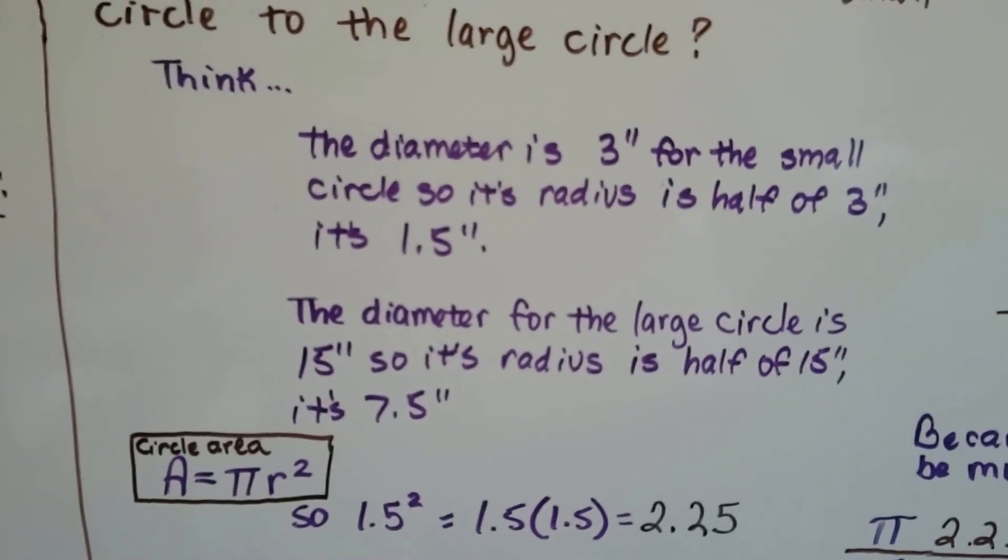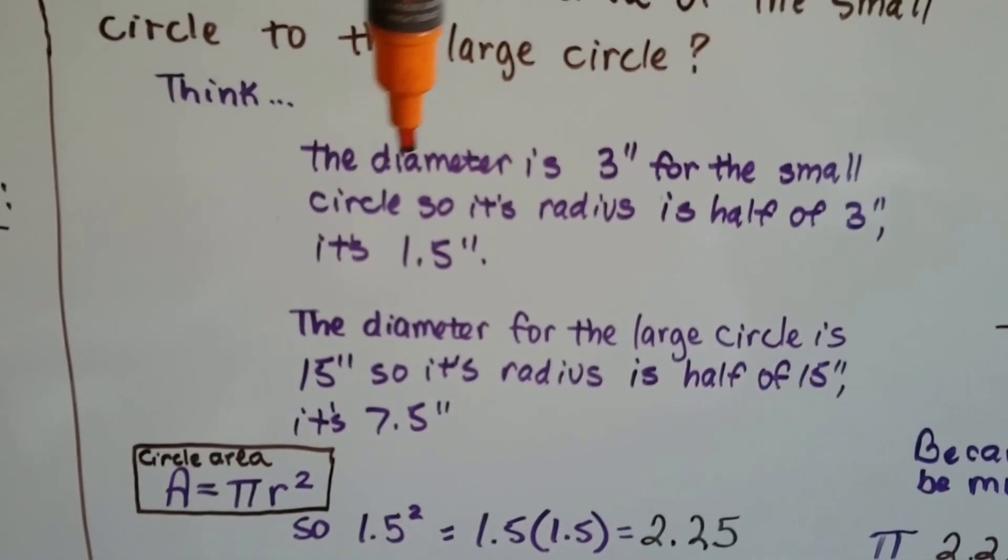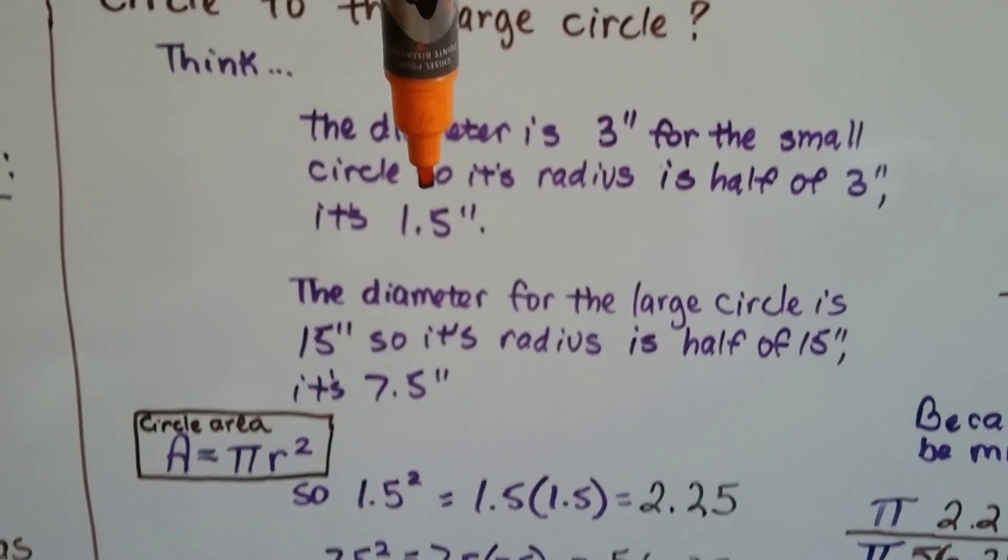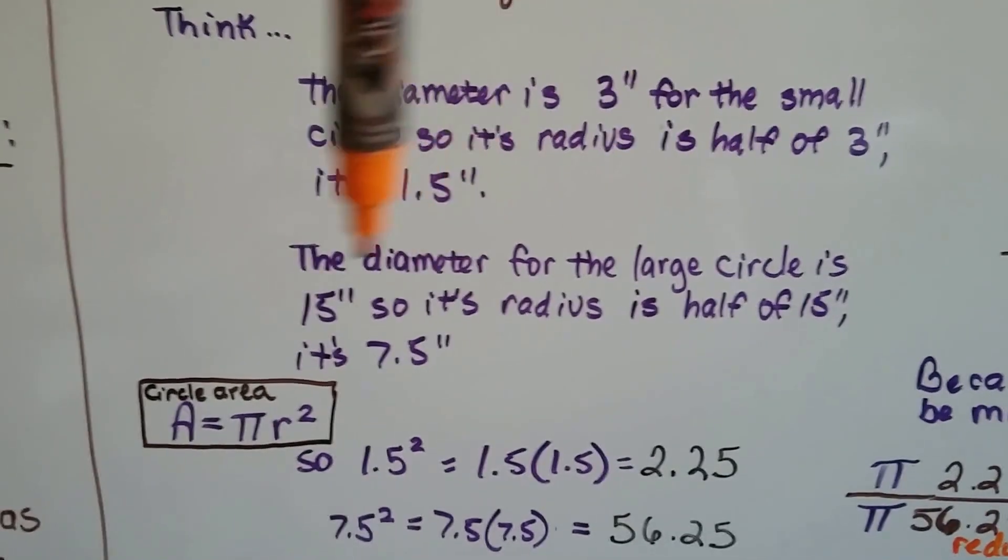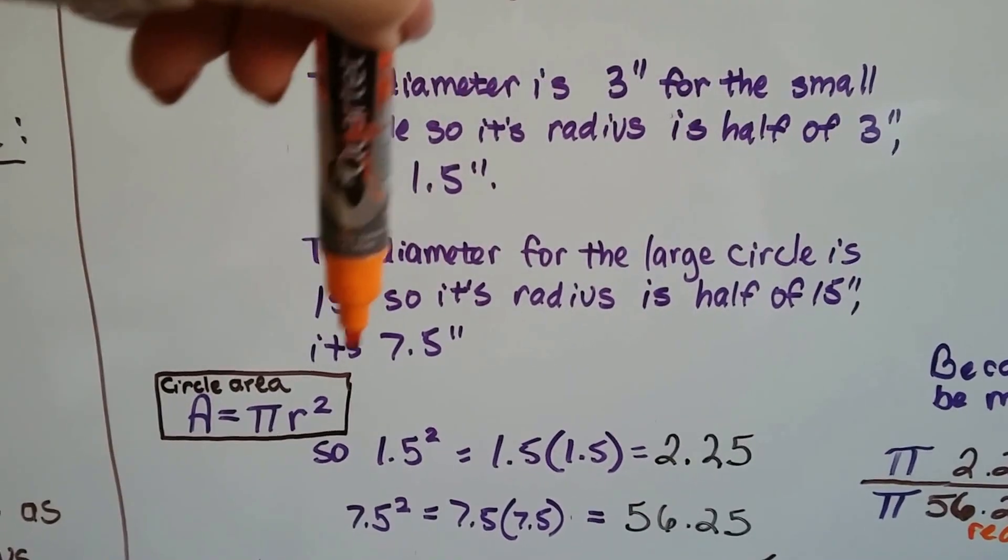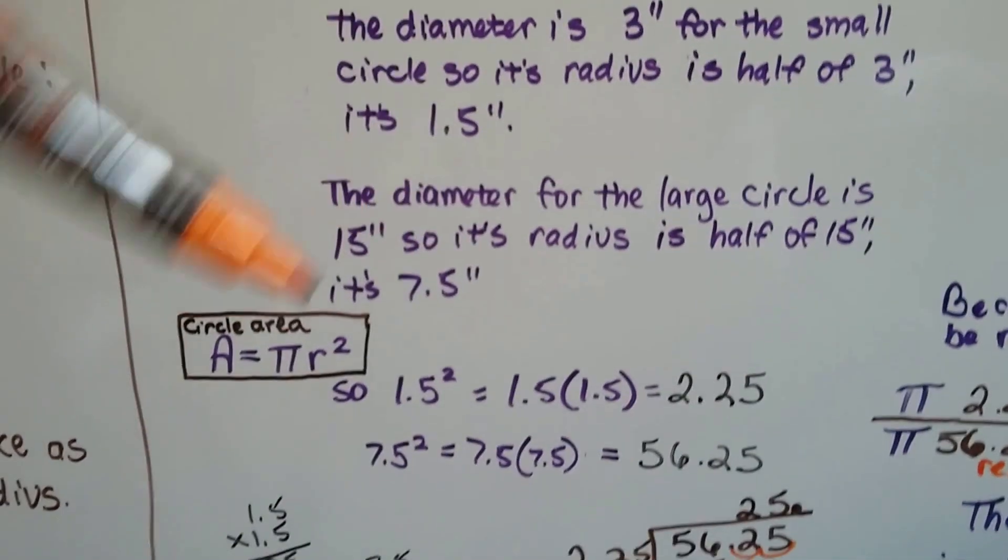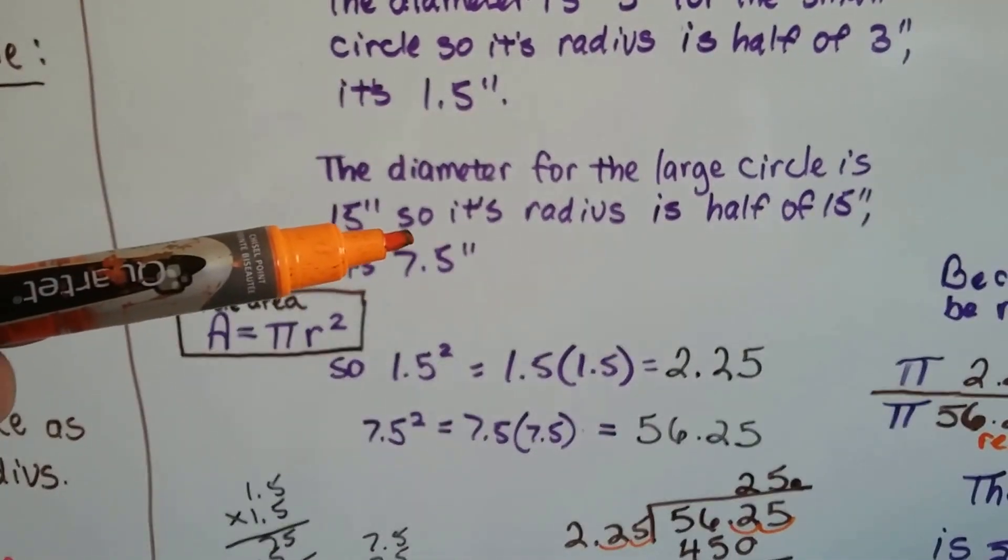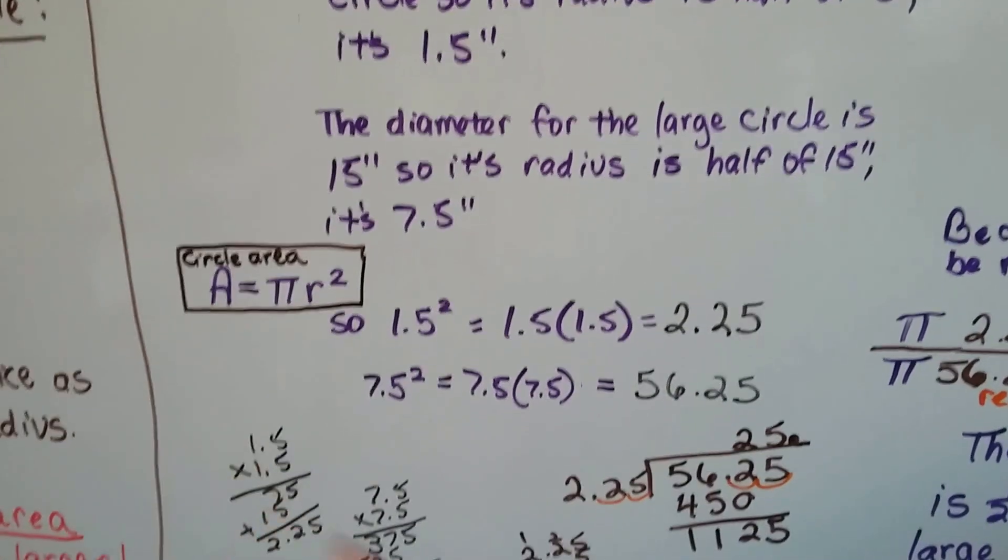So we think. The diameter is 3 inches for the small circle. So its radius is half of 3 inches. It's 1.5 inches. The diameter for the large circle is 15 inches. So its radius is half of 15. It's 7.5. Now I know you're thinking 1.5 is 1-5 of 7.5, but let's see what happens.